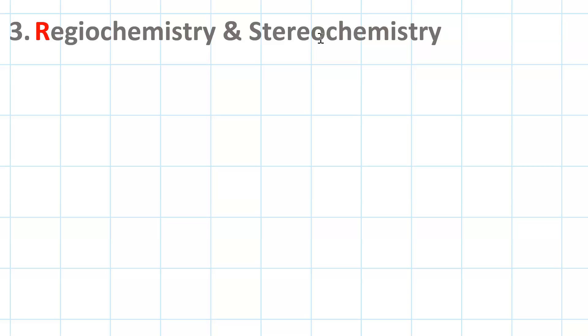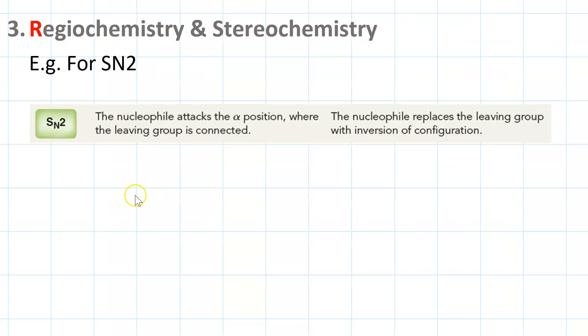One way to do it is to draw all possible outcomes and then select the ones that are valid based on the mechanism. For instance, when we're talking about SN2, regiochemically speaking, the nucleophile attacks the alpha carbon and then the leaving group leaves. Stereochemically speaking, you get inversion of configuration. R switches to S, S switches to R.